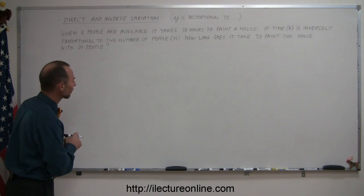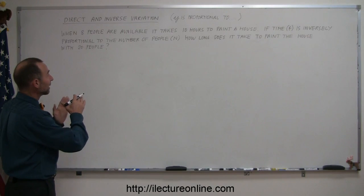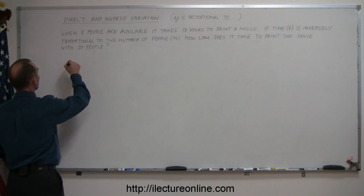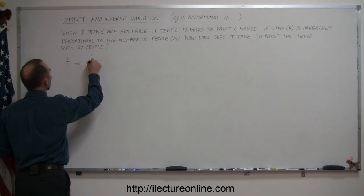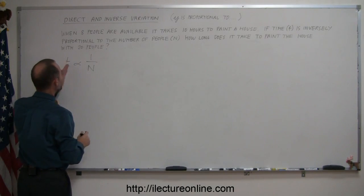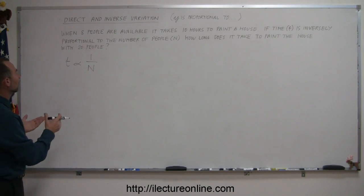Alright, let's see if we can figure this out. So the time that it takes to paint is proportional to 1 over the number of people. So that's what we mean by it's inversely proportional or it varies inversely to the number of people n.